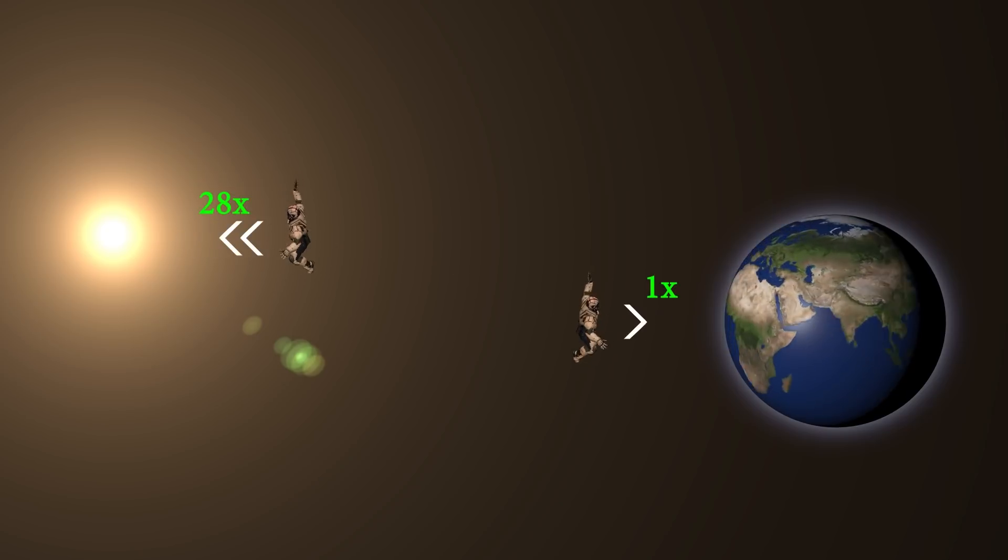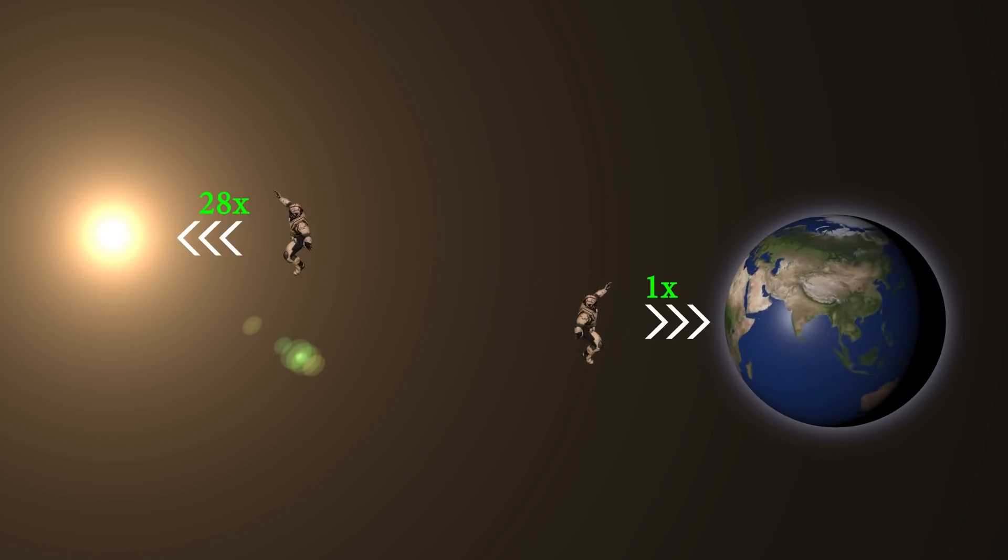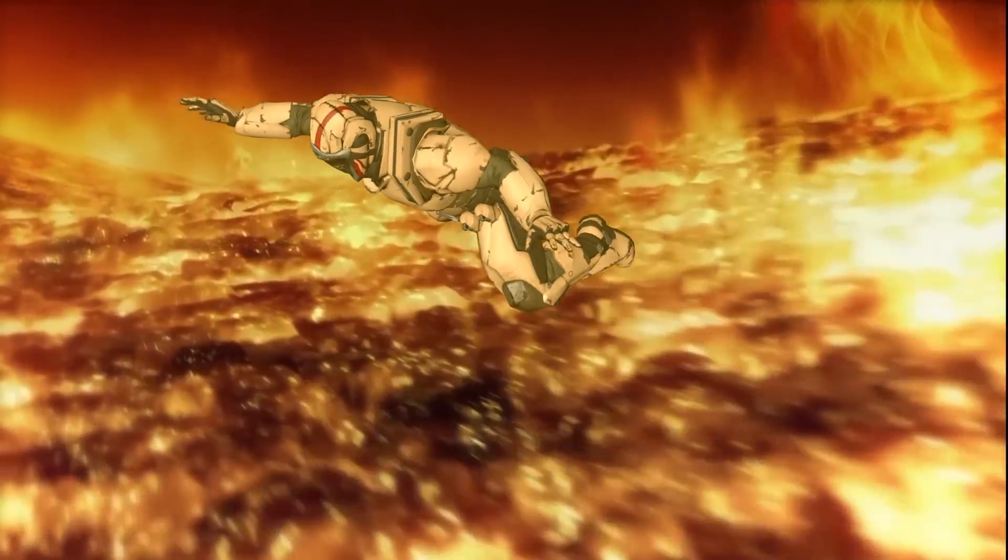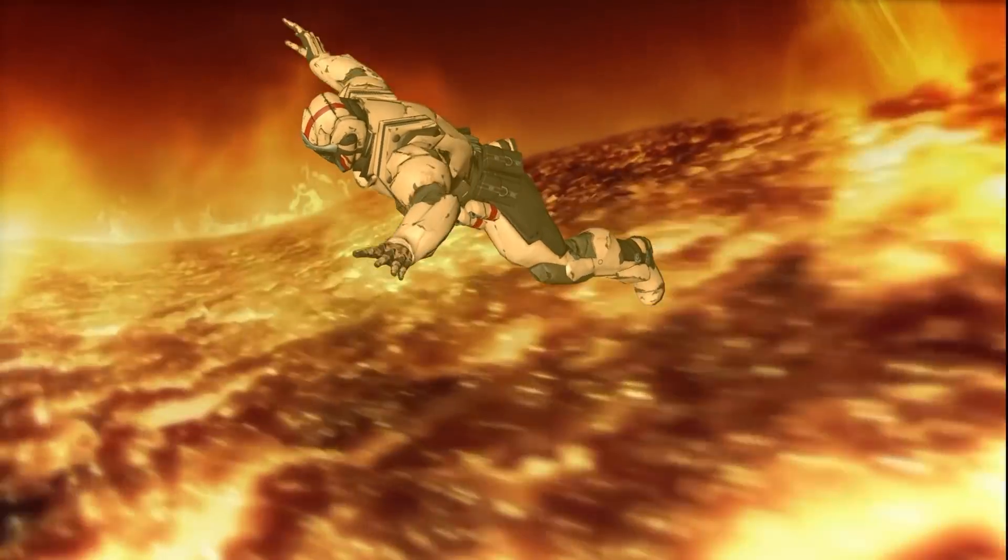Because the gravity of the Sun is so strong, you would be descending roughly 28 times faster than if you were falling towards Earth. And in no time, you would reach the lowest layer of the Sun's atmosphere, photosphere.